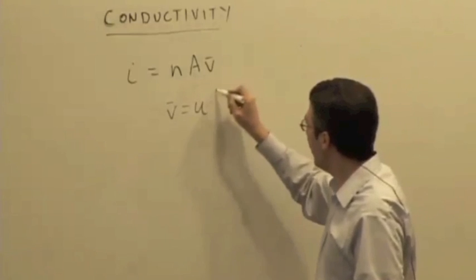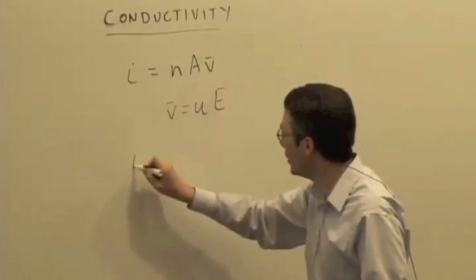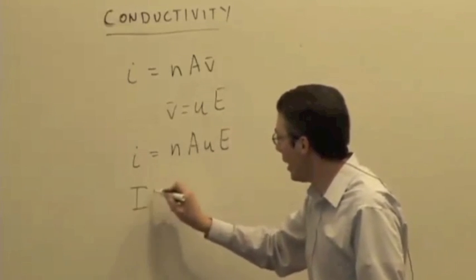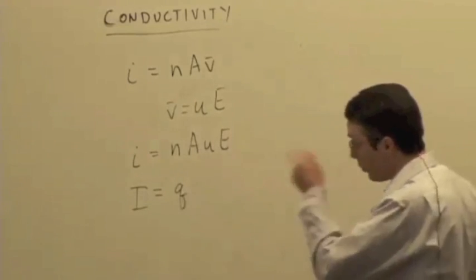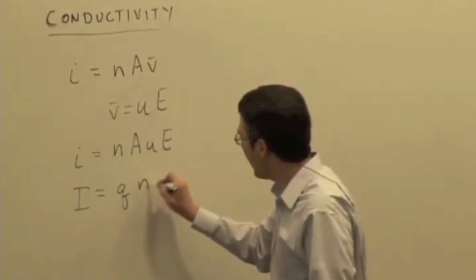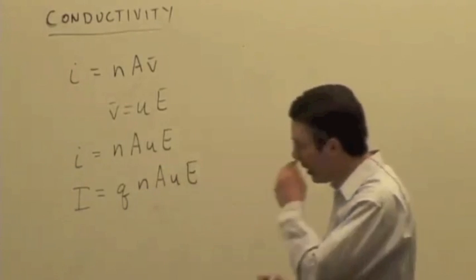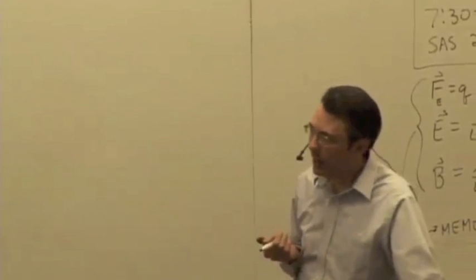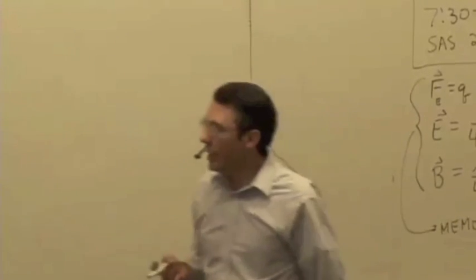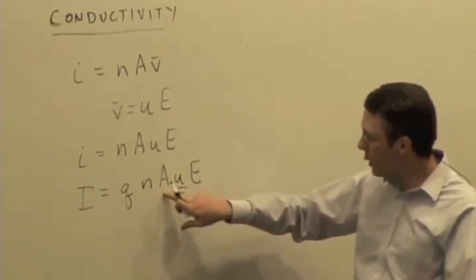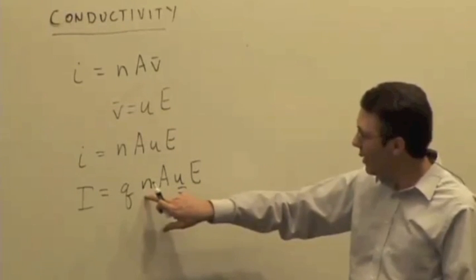V is equal to mobility times electric field, so little i is N-A-U-E. Capital I is then the charge of an electron, or the charge of whatever the mobile charge is in the conductor, times N-A-U-E. When we're thinking about how easy it is for a current to flow given a particular electric field inside a conductor, it depends on a number of things. It depends on the mobility, the cross-sectional area of the wire, and the electron density.